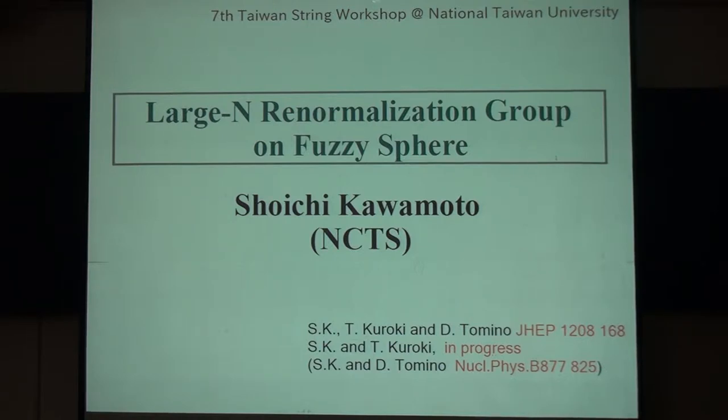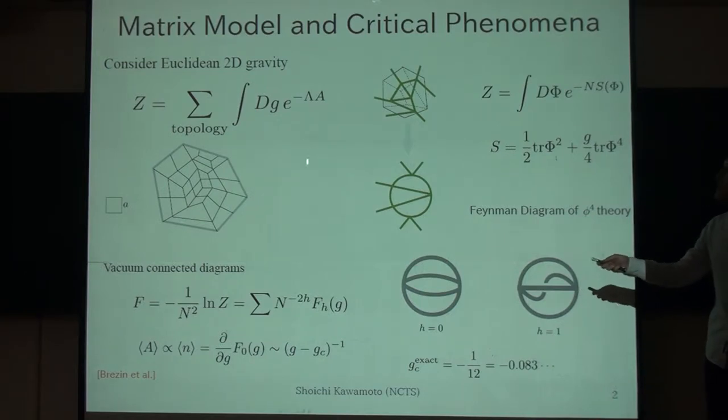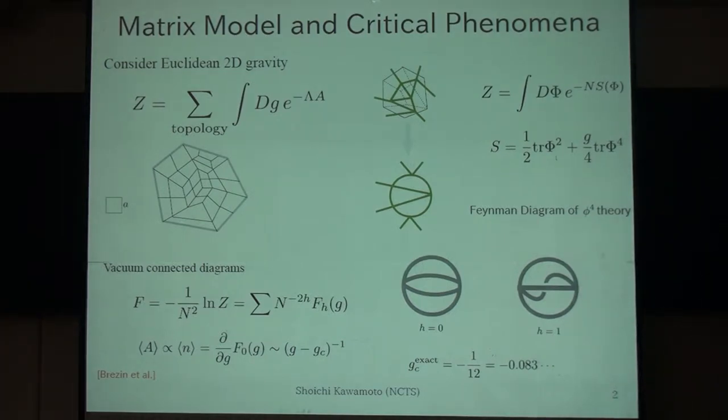Today I'm going to talk about some renormalization group approach to the matrix models. This type of study is motivated by the following problems. Let us consider some Euclidean two-dimensional quantum gravity. The partition function may be given by summing over the discretized random surfaces.